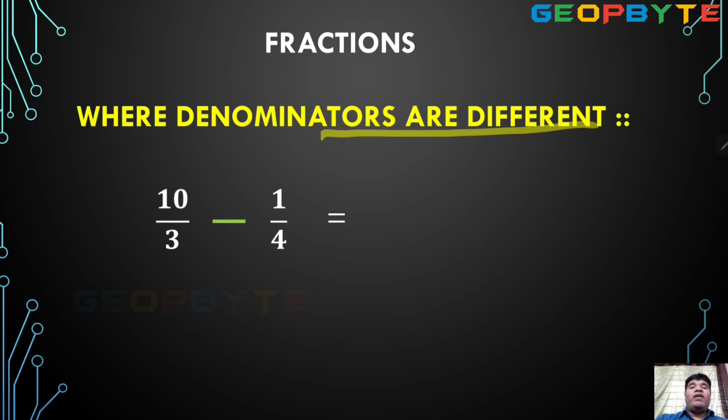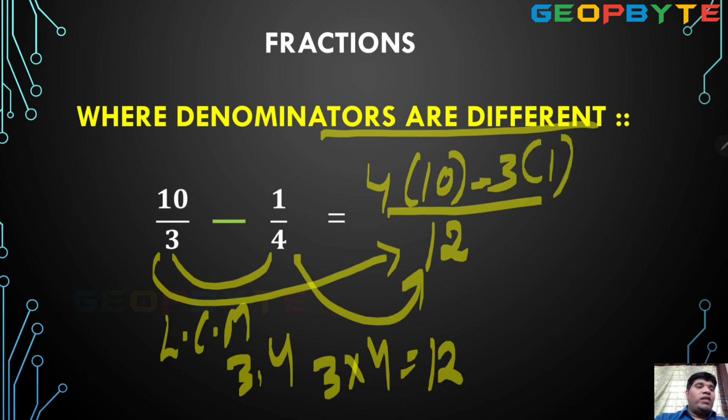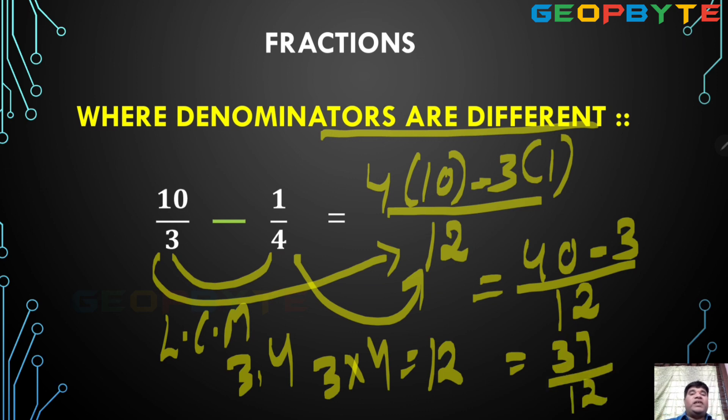Denominators are different. Then what do we do? Already know. 3, 4 we have to calculate LCM. 3 and 4 does not divisible by any single number. So you can take directly multiplication. 3 into 4, 12 is the LCM directly. This 12 divided by the 3, how many times? 4 times. 4 into 10 minus. This 12 divided by the 4, how many times? 3 times. That 3 into 1. Simplify. 40 minus 3 upon 12. 37 by 12. Here there is no simplification, so keep it originally. 37 by 12 is the answer.